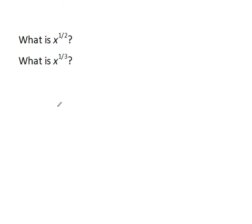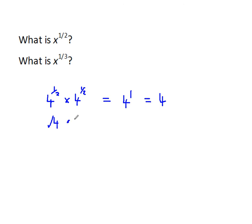What do fractions mean as indices? Consider 4 to the power of a half times 4 to the power of a half. When you multiply two numbers with the same base, you add the indices, and a half plus a half is 1, so the result is 4 to the power of 1, which is 4. We have a number which when multiplied by itself gives 4 — that must be the square root of 4. So 4 to the power of a half is the square root of 4, which is 2. In general, x to the power of a half is the square root of x.